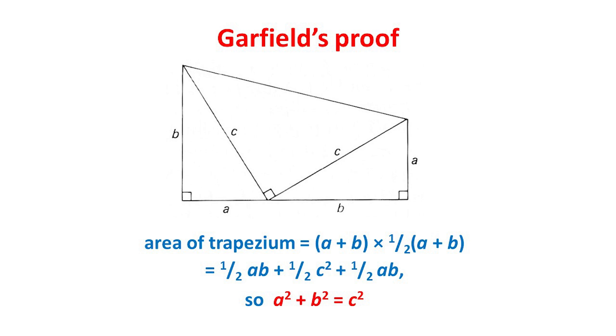While the total area of the three triangles, each area being half of its base times its height, is one half ab plus one half c² plus one half ab. If we now equate these areas and simplify the algebra, we then get a² + b² = c², as we wanted.